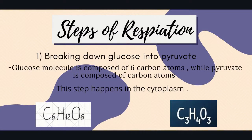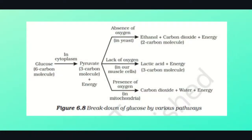The first step common in both aerobic and anaerobic respiration is the breakdown of glucose into pyruvate. Glucose is a six-carbon molecule (C₆H₁₂O₆), and pyruvate is a three-carbon molecule (C₃H₄O₃). This process occurs in the cytoplasm of the cells. After the conversion of glucose into pyruvate, there can be three possibilities of further breakdown of pyruvate.